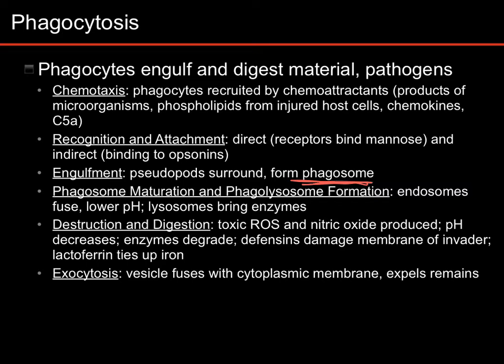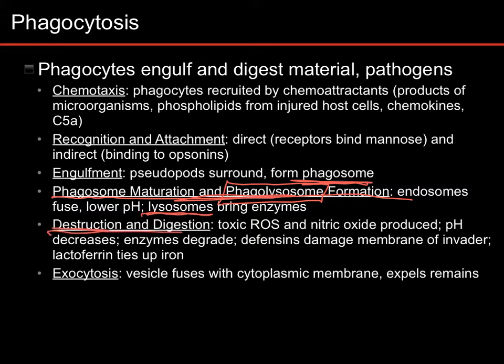Then you have phagosome maturation and phagolysosome formation. Basically, your phagosome is going to merge with a lysosome, which is a digestive organelle, and that will form the phagolysosome. Basically, the cell is going to combine its stomach with the thing that it just ate, and then the thing that it just ate is going to be exposed to those digestive enzymes, which will cause it to be destroyed and digested.